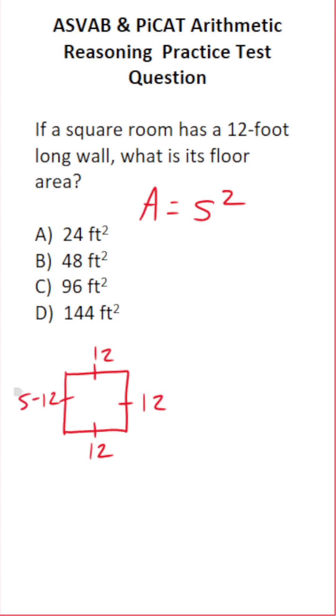What is its side length? Well, we know that's 12 according to the problem. So this is 12 squared. Many of you would say 12 squared is 12 times 12, which is 144. So this one is D.